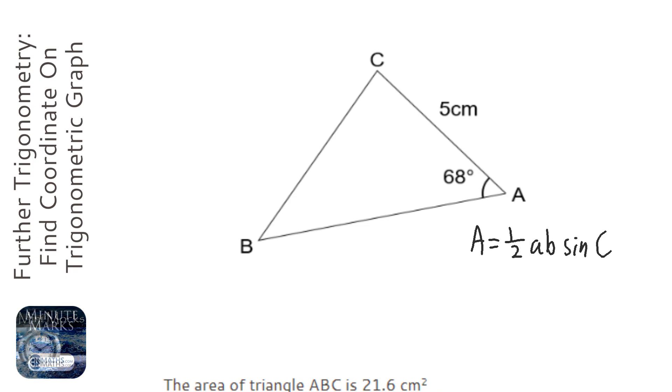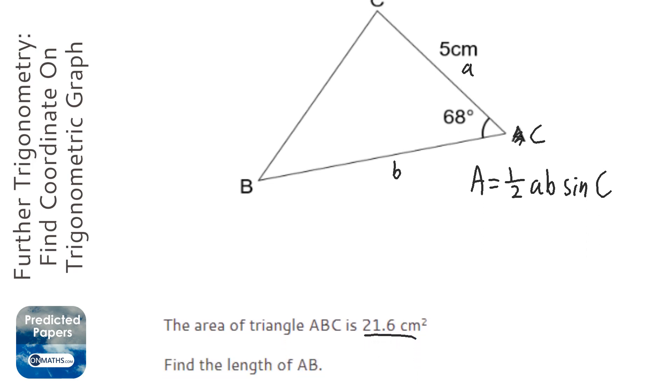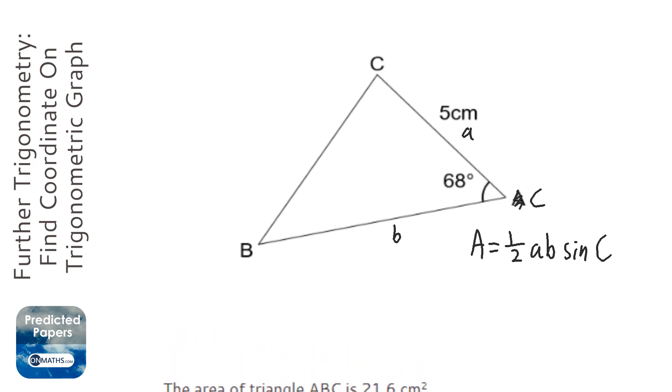Now C is the angle we're given, so C is here, and a and b are the lengths. We're looking to find b because we're asked to find length AB.